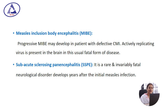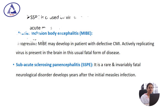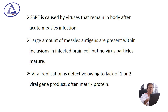Subacute sclerosing panencephalitis (SSPE) is a rare and invariably fatal neurological disorder that develops years after the initial measles infection. SSPE is caused by viruses that remain in the body after acute measles virus infection. Large amounts of measles antigens are present within inclusions in infected brain cells, but no mature virus particle is produced. Viral replication is defective due to lack of one or two viral gene products, often the matrix protein.